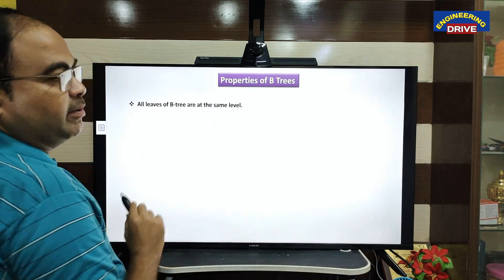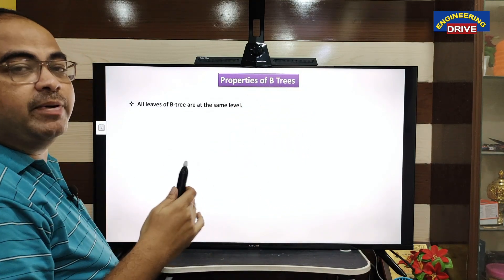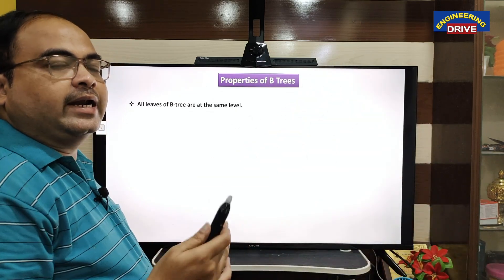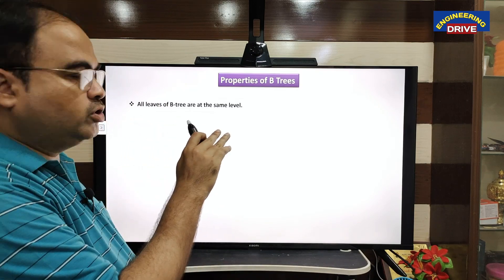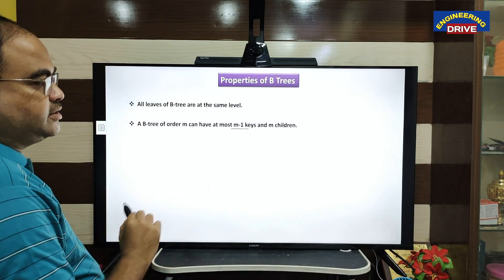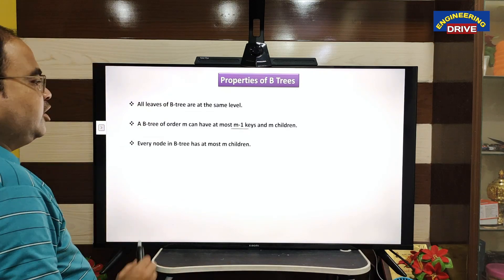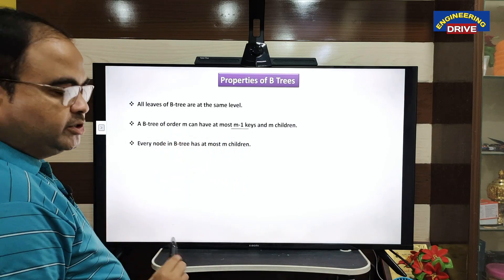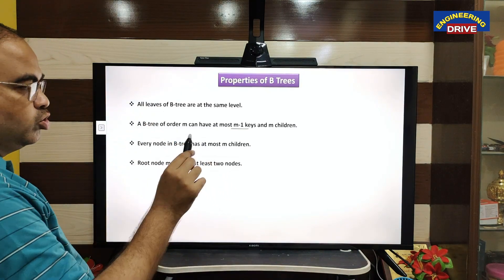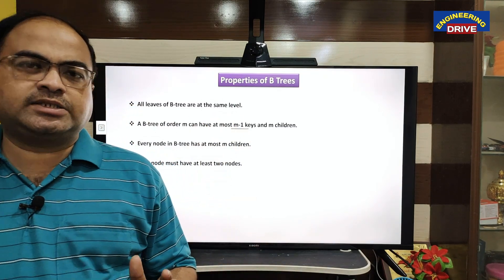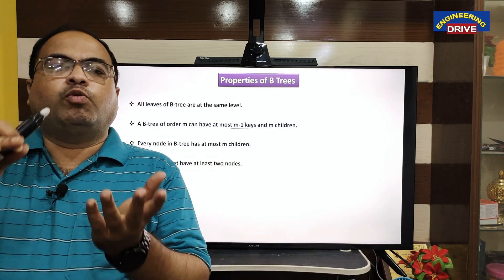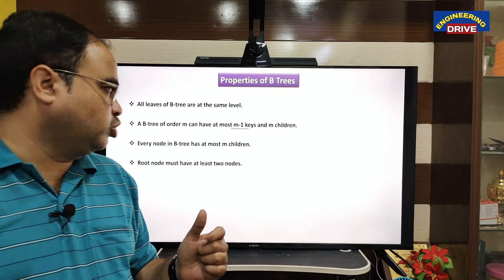Before the example, let me discuss the properties of B-trees. First, all leaves of a B-tree are at the same level — unlike other tree types, we do not have one leaf at the fifth level and another at the fourth level. A B-tree of order m can have at most m minus 1 keys and m children. Every node in a B-tree has at most m children, and the root node must have at least two nodes. The specialty of B-trees is that one node can store multiple values, unlike binary search trees or AVL trees where every node holds only one value.